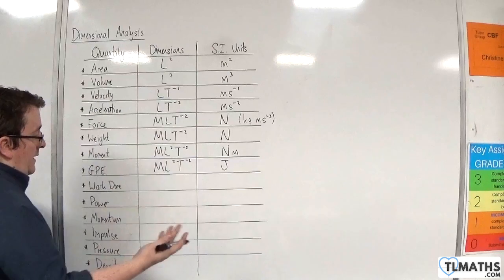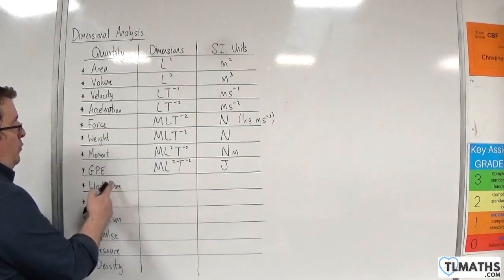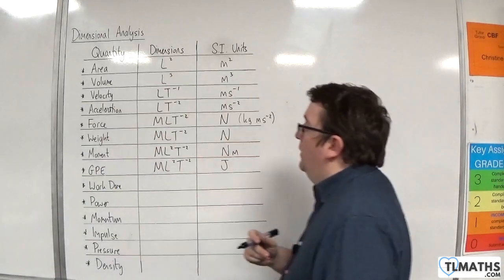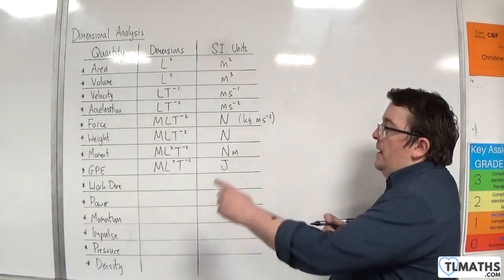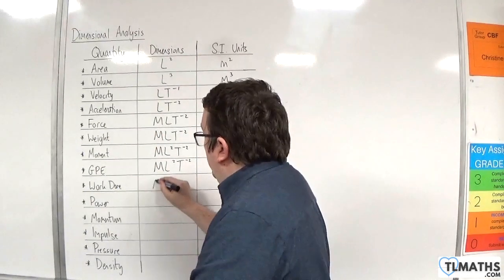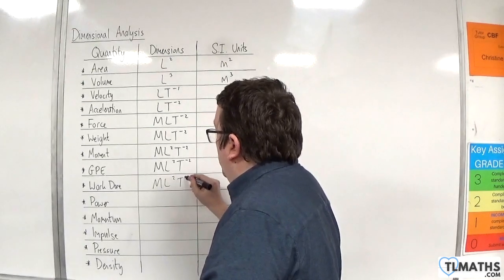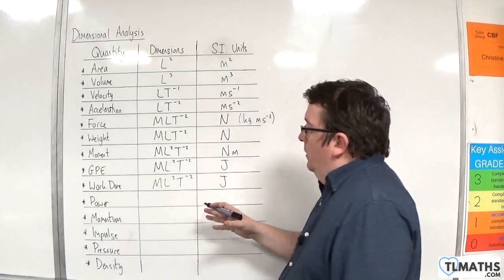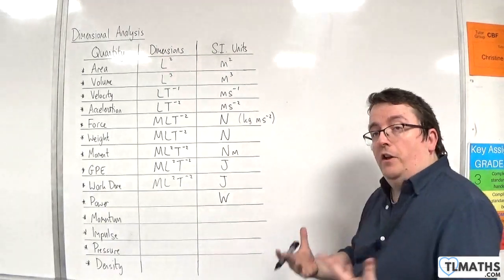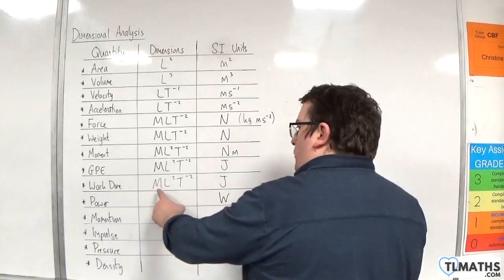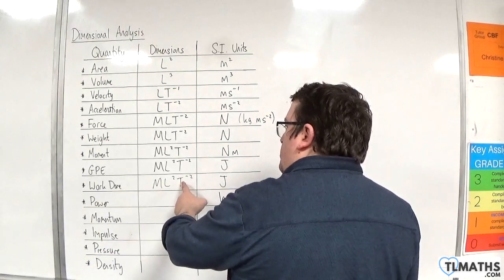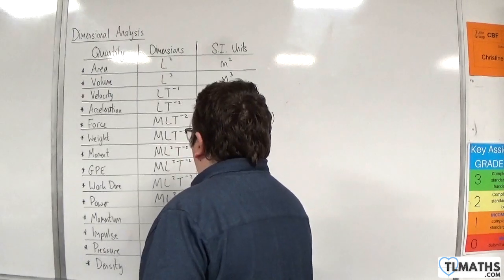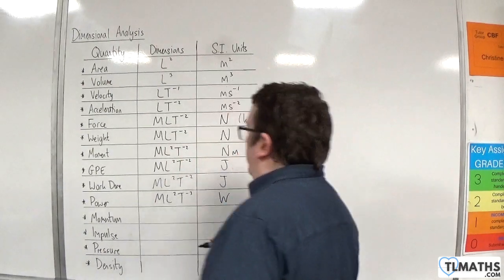Work done is energy — force times distance — so it has the same dimensions: M, L squared, T to the minus two, and is measured in joules. Power is measured in watts and is work done over time. So it's M, L squared, T to the minus two, divided by T — giving M, L squared, T to the minus three.